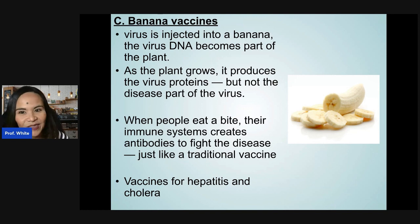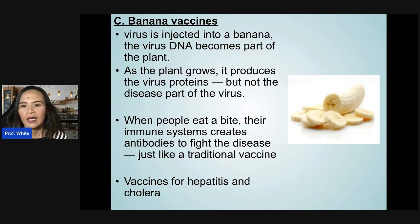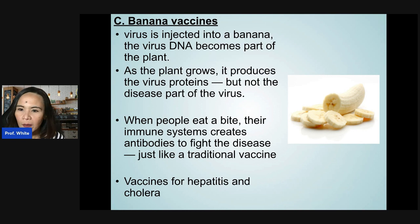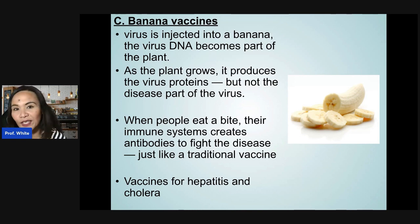Another example is banana vaccines. A virus is injected into a banana, and the virus DNA becomes part of the plant. As the plant grows, it produces the virus proteins but not the disease-causing part. When people eat it, their immune system creates antibodies to fight the disease, just like a traditional vaccine — for example, for hepatitis or cholera.